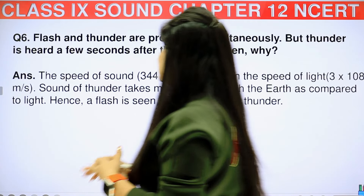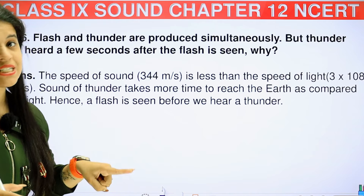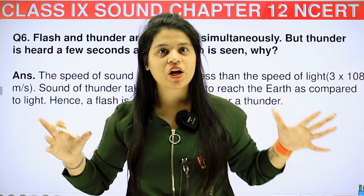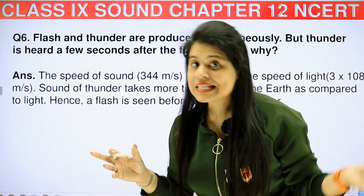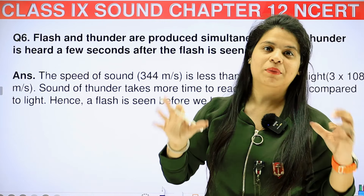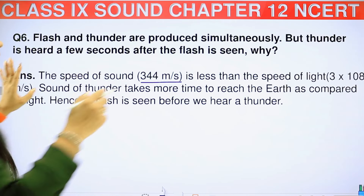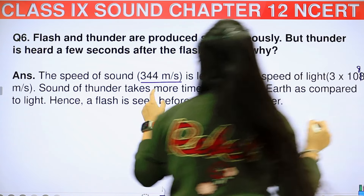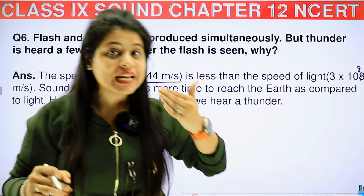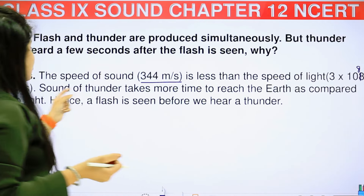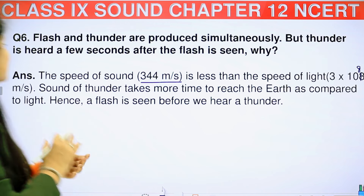Question 6: flash and thunder are produced simultaneously, but thunder is heard a few seconds after the flash is seen — why? The speed of sound is much less than the speed of light, which is 3 × 10⁸ m/s. Therefore, the sound of thunder takes more time to reach us compared to light. Hence, a flash is seen before we hear the thunder.